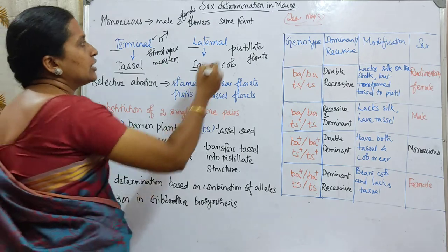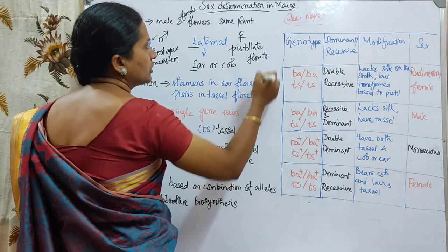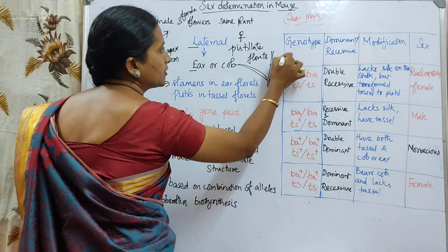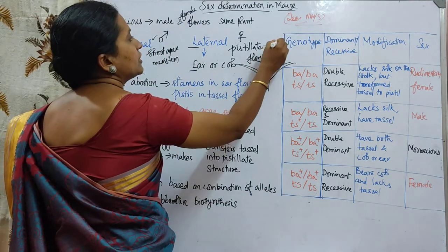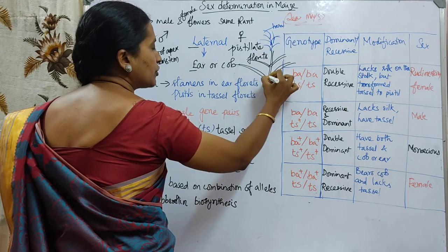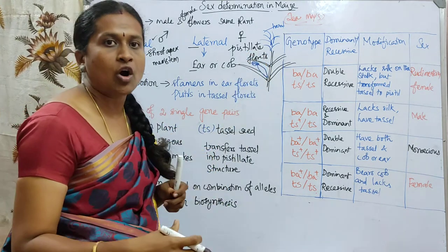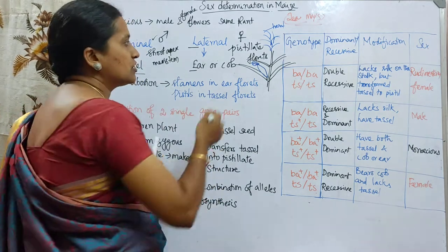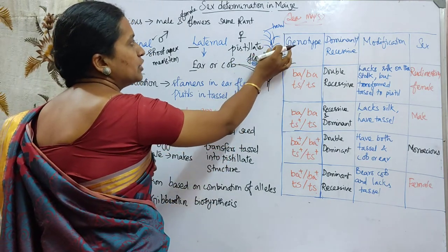So T for terminal means it is the male flower, and L for lateral means it is the female flower. The tassel is at the shoot apex, and the silk-like thread structures — the female flowers — are on the lateral side. When we purchase corn with its green cover, we can see brown thread-like structures called silk.